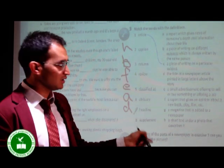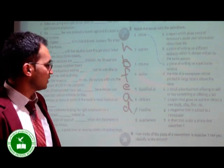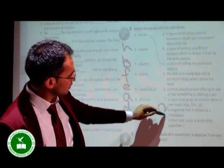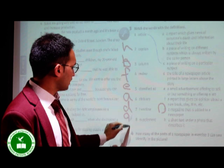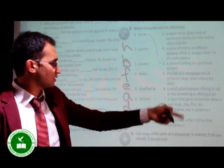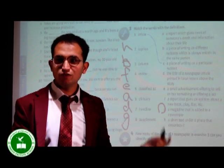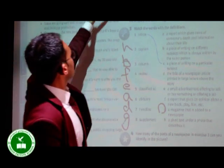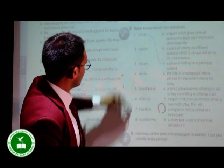And the most difficult one, the last one is supplement. What do you think? Which letter is left? As you see, letter G. So, supplement is letter G and it means a magazine that is added to a newspaper. So, this is done. Let's continue with exercise number 4.